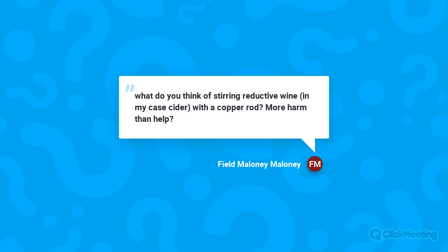On using a copper rod to stir a reductive wine: I would prefer copper sulfate over a copper rod because copper sulfate is a controlled, measurable addition — with a copper rod you have no idea how much copper you're adding. Copper sulfate is inexpensive and gives you better control over the amount being added.